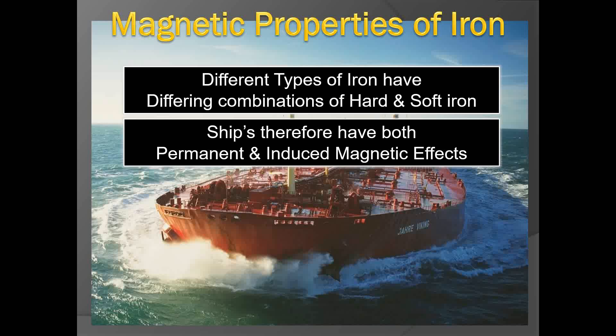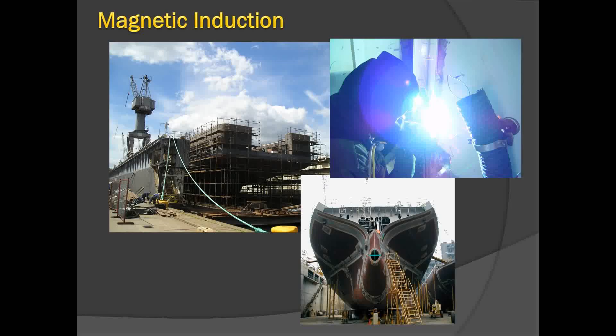Soft iron and hard iron represent two theoretical extremes, neither of which can be accurately described in practice. The terms soft and hard are also used in a relative sense — a piece of iron may be soft compared with one piece and hard compared with another. In practice, every piece of iron has some quality of hard iron and some quality of soft iron. A vessel built of iron and steel is not built of materials specifically chosen for magnetic properties, so we can expect to find both permanent and induced magnetism in the material affecting the ship's compass.